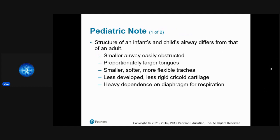Pediatric airways differ from adults. They're smaller and more easily obstructed, with larger tongues relative to airway size. Their tracheas are softer, more flexible, and smaller, making them easier to obstruct or tear. They have less developed cricoid cartilage and are heavily dependent on the diaphragm for breathing since intercostal muscles aren't as developed.